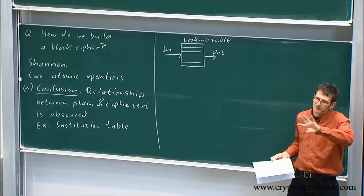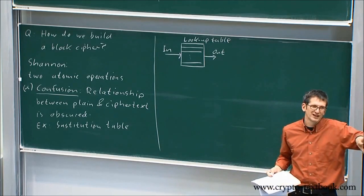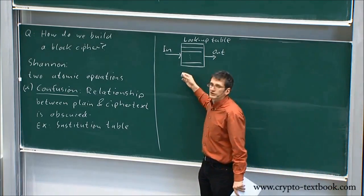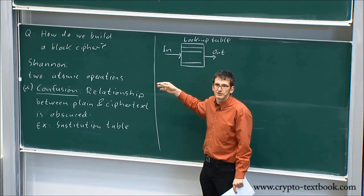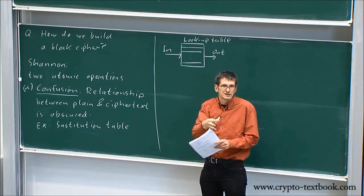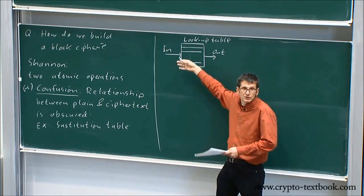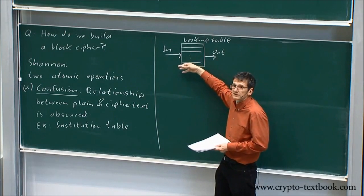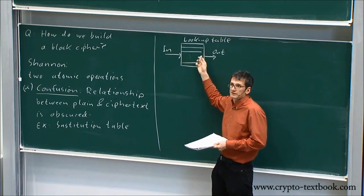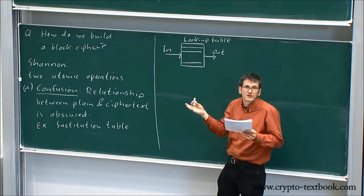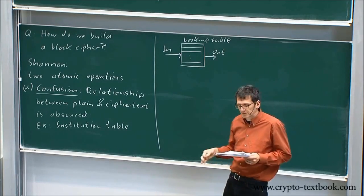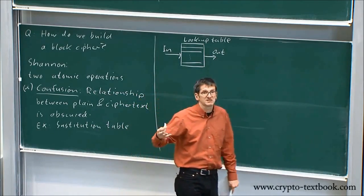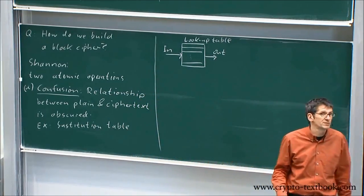The baby ciphers we did in the first two lectures - the Caesar cipher, the substitution cipher - these were purely confusion elements. You replace the letter A by the letter D. You could do that as a table with 26 entries. For a certain input, you get a certain output. It's a fancy word for substitution table or lookup table. That's the first thing Claude Shannon said is a good idea if you want to build a strong cipher.